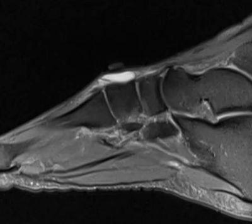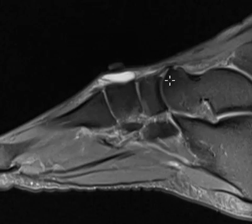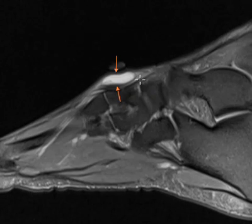Hello, this is Dr. Gay from FirstLake MRI and this is an example of a ganglion cyst in the foot. Ganglion cysts are just benign fluid collections. They're usually in the foot or ankle or the wrist, and this is a good example of just a simple little ganglion cyst in the dorsal foot.